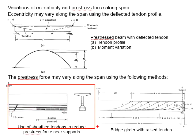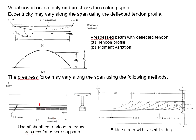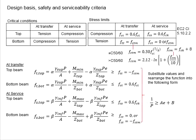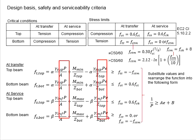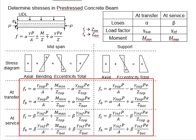The debonding method is normally adopted when it is not possible to adjust the eccentricity of the tendons along the span — for example, when there are so many tendons that a curvature profile would be complicated. It is easier to define the locations where tendons are debonded. Under such circumstances, e remains constant throughout the span; however, P at the midspan and at the support will be different, leading to different formulas to determine the stress in the pre-stressed beam.